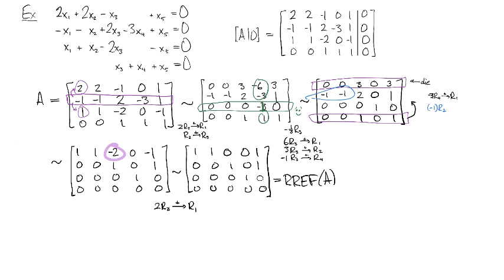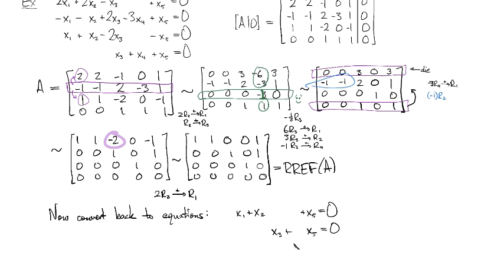So at this point here, we convert back to equations. Because this is the simplest that we can make this system of equations. And so the first row says x1 + x2 + 0 + 0 + x5 = 0. And then the next one is x3 + x5 = 0. And the third row just says x4 = 0. And so we go back and say let's identify our pivots. So we've got a pivot here, pivot here, and a pivot here.